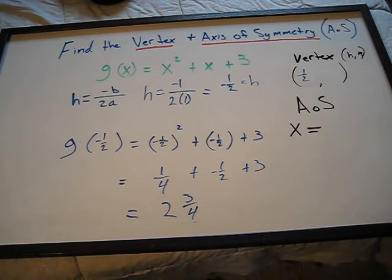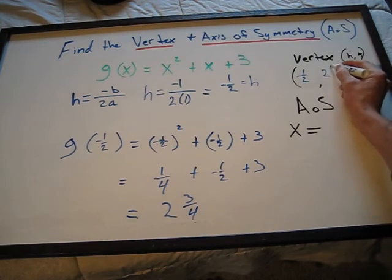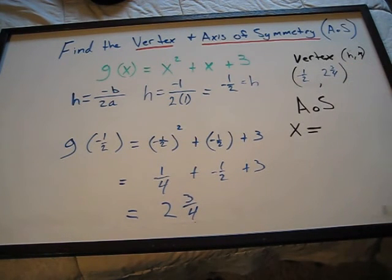And we'll put that in over here as k, 2 and 3 quarters. And our vertex is in the form of interval notation, which is negative 1 half and 2 and 3 quarters for our vertex.